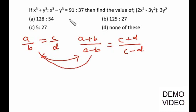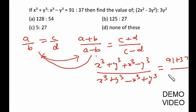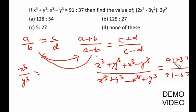We have X³ + Y³ over X³ − Y³ = 91/37 in this format, so we apply componendo and dividendo. Numerator becomes (X³ + Y³) + (X³ − Y³) and denominator becomes (X³ + Y³) − (X³ − Y³), equal to (91 + 37)/(91 − 37). The Y³ terms cancel in the numerator and the X³ terms cancel in the denominator, giving 2X³ / 2Y³ = 128/54.